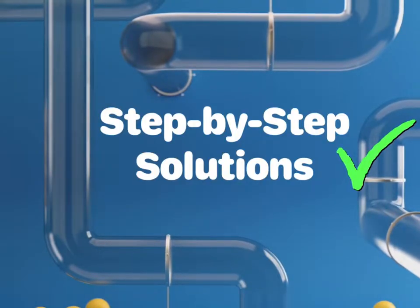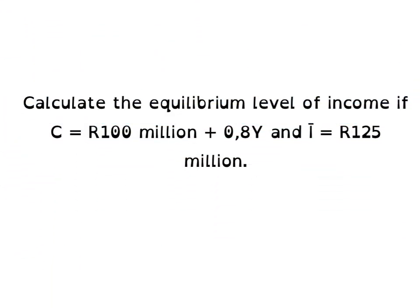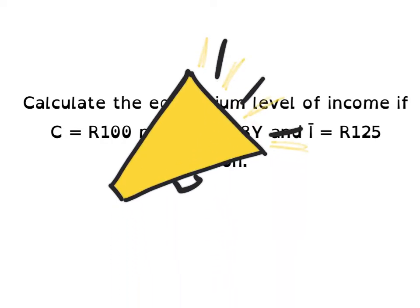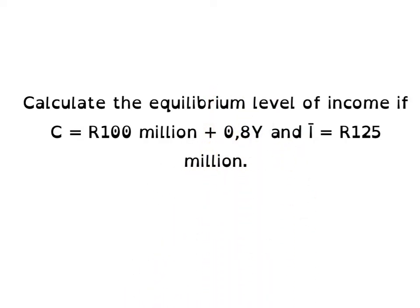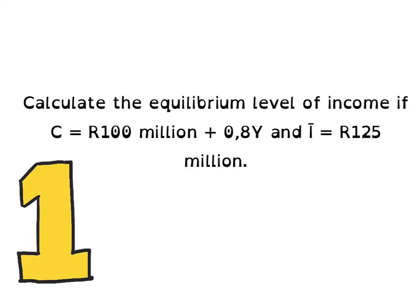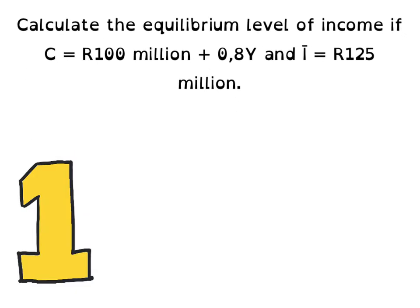Hi econ students and welcome back. As promised, we are going to do some step-by-step solutions on the simple Keynesian model. We are going to look at three different examples, two of which were already given to my students. In our first example, the following was given: calculate the equilibrium level of income if C is equal to 100 million rand plus 0.8Y, and autonomous I is equal to 125 million rand.